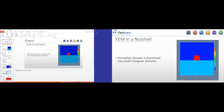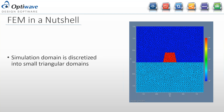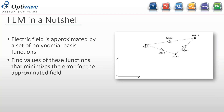On the right we have the silicon-on-insulator ridge waveguide with slanted walls. You can see that sampling the refractive index on the FD rectangular grid gives a staircase effect, which leads to some errors. In the finite element method, you take the domain and discretize it into a bunch of little triangles — these are called elements — which capture the exact geometry of the problem.